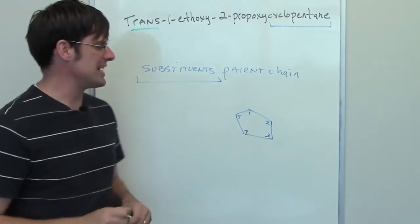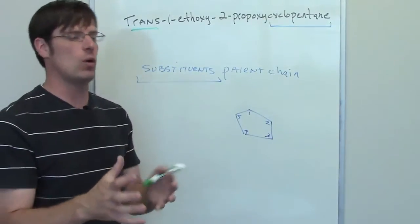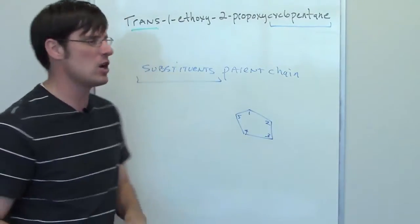What that means is that when I draw these things on, I'm not going to draw an up or a down, a wedgie or a dashie, until I'm all done identifying what the substituents are and where they go.